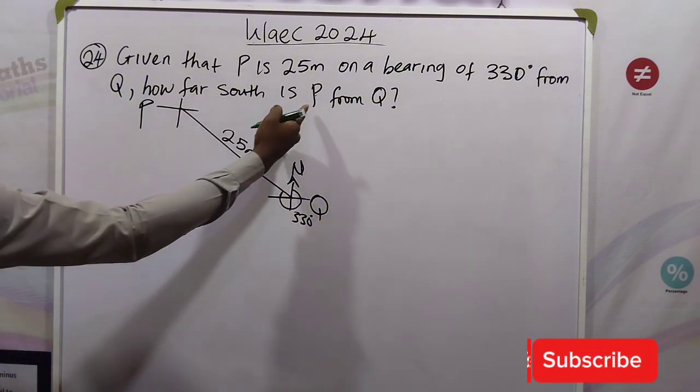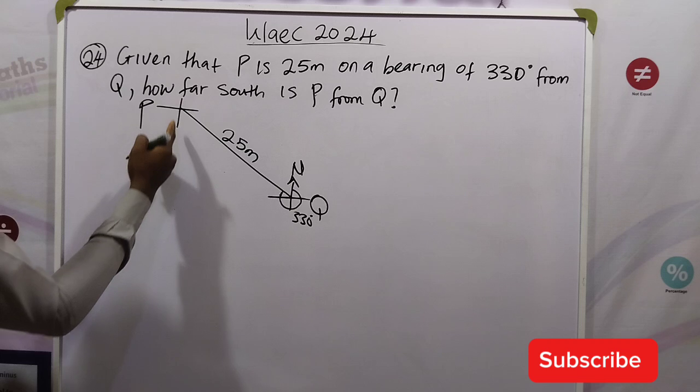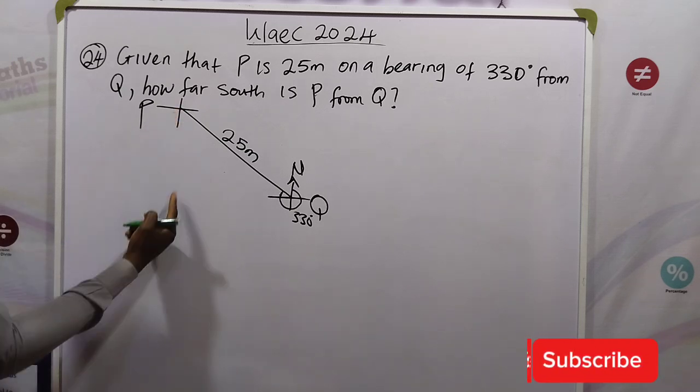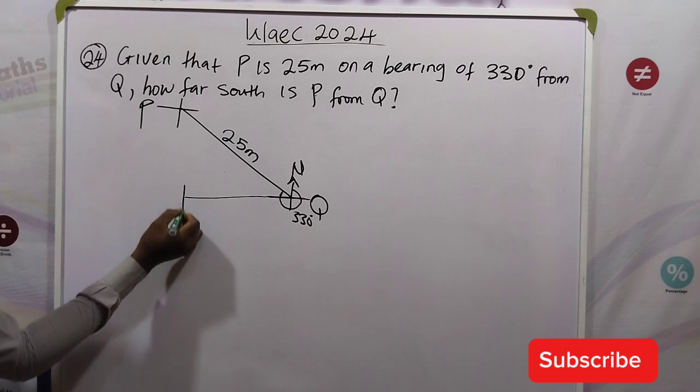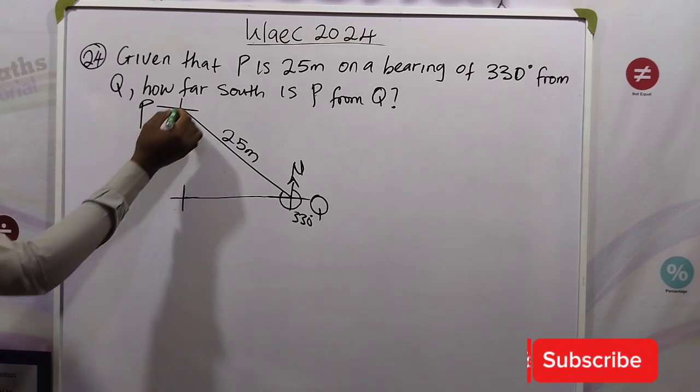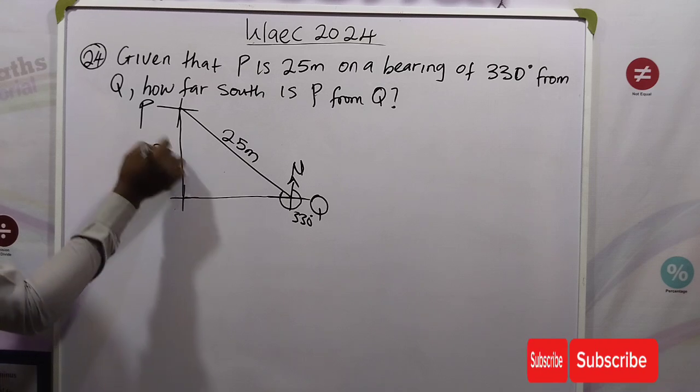Now the distance of P from Q at the south position should be the distance at this point. Because if Q goes southwards, Q will come to this position. Then P drops like this. So the distance we are looking for is this distance.